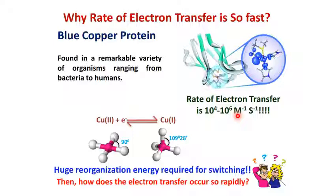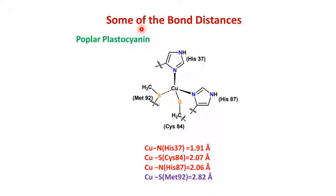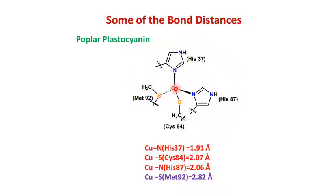To understand how this electron transfer occurs so rapidly, we have to understand the structure-property relationship. Here are some bond parameters for the blue copper protein plastocyanin. The copper center is surrounded by 4 ligands: 2 histidines (His 37 and His 87), and the imidazole part of these histidine moieties forms the organic scaffold. There are two sulfur moieties — one is methionine sulfur and one is cysteine sulfur. The copper-nitrogen distance of histidine is 1.91 Å and the copper-sulfur distance is 2.07 Å. In oxidized form copper is Cu2+ and in reduced form it is Cu1+.